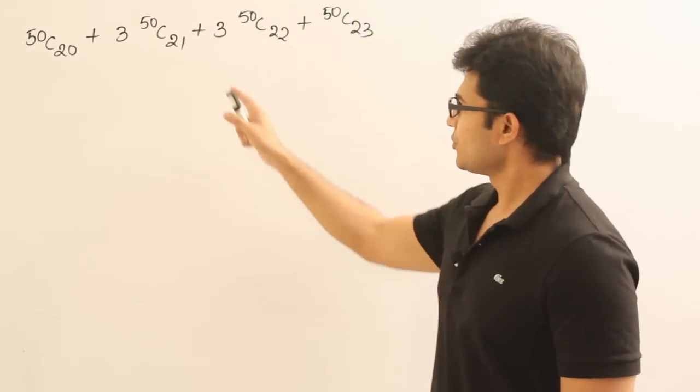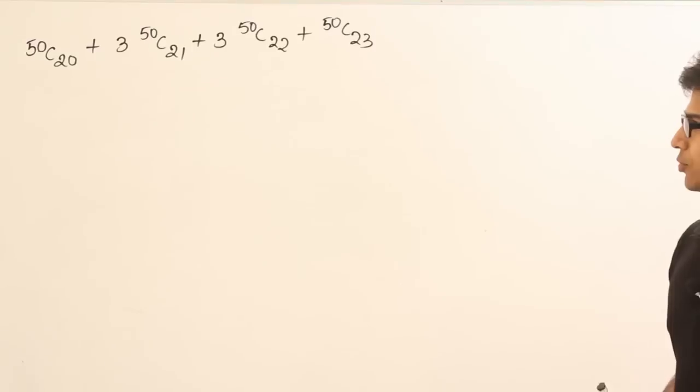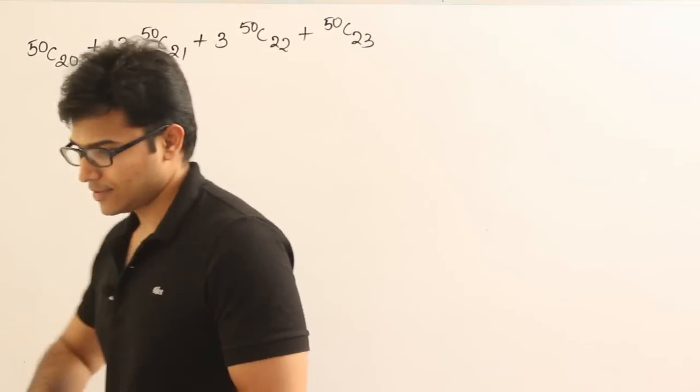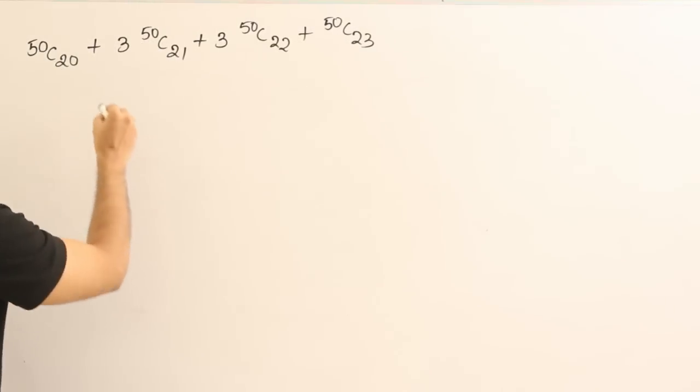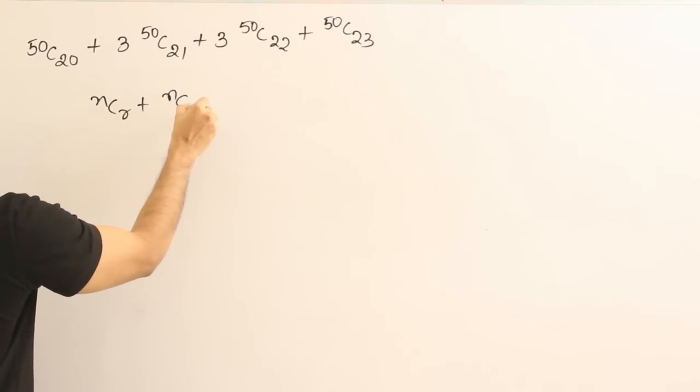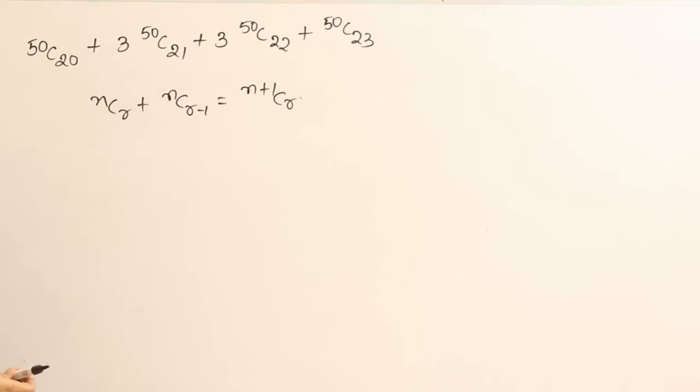Now in this example, we are supposed to add all these terms and get just one term as the output. Again I am going to use the same result. What is the result? This is nCr plus nC(r-1) equal to (n+1)Cr. This is the result I wanted to use.